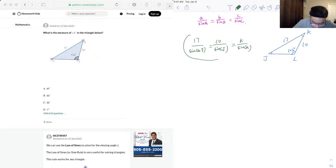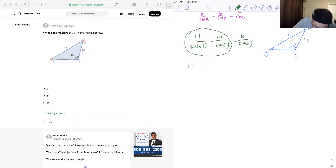So let's just focus on the front part, and by applying cross multiplication we will have 17 times sine J is equal to 10 times sine 102. All right.